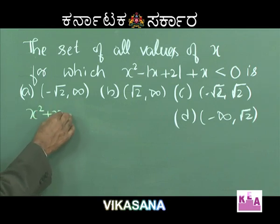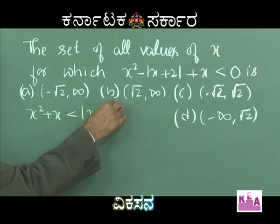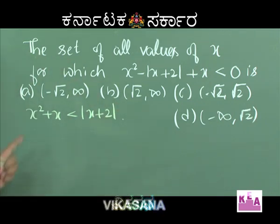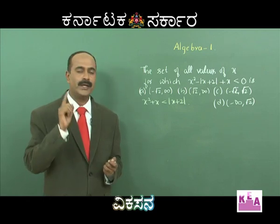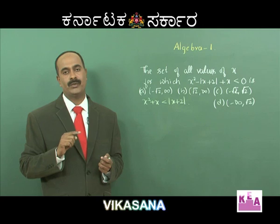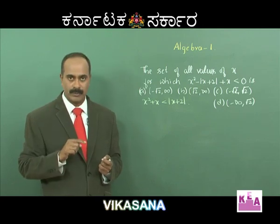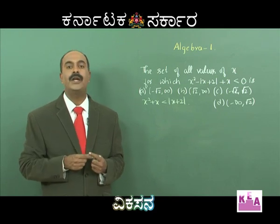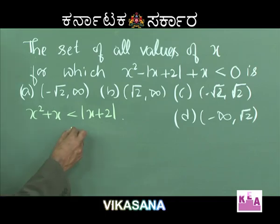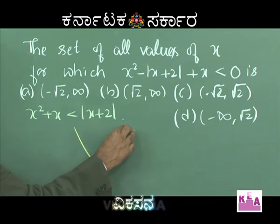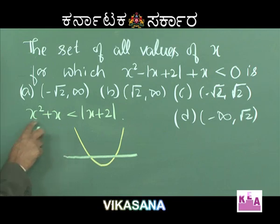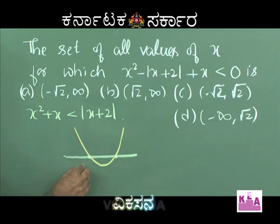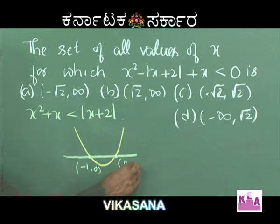Rearranging: X² + X > |X + 2|. We look at the right side as mod of X + 2. For X² + X = 0, the roots are 0 and minus 1. The parabola is facing upwards because the coefficient of X² is positive.